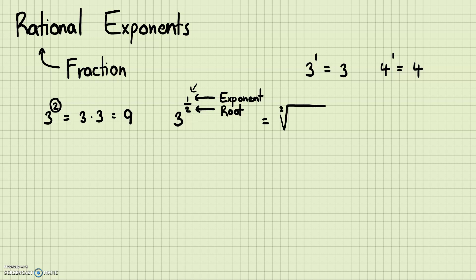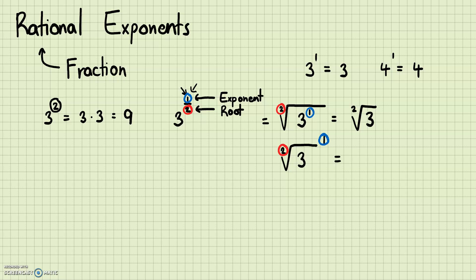Remember, a square root is a root with an index of 2. So this is going to be the square root of the number. You can be more specific and say this is raised to the exponent 1 — the square root of 3, or the square root of 3 raised to the 1st power. You can do the exponent first and then the root, or the root first and then the exponent. The order doesn't really matter. Both of these are just going to be equal to the square root of 3.